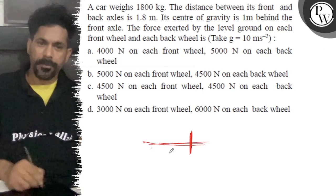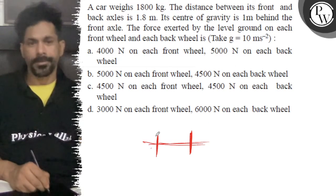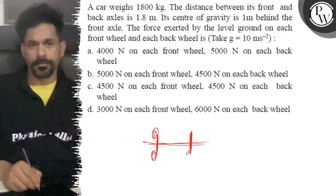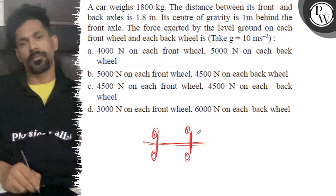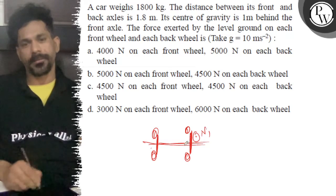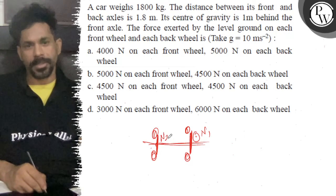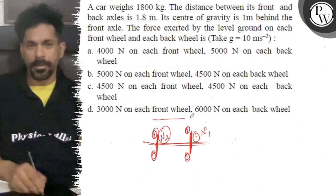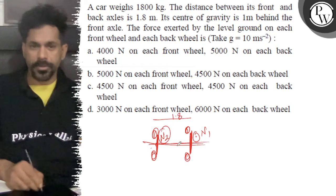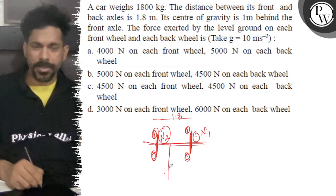So if you can see the car, this is the front wheel and this is the back wheel. Normal reaction is up here, normal reaction n1, and here normal reaction n2. And mg, which is 1.8 meters... so here from 1 meter we have mg.